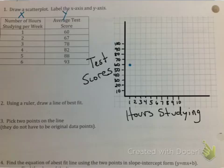You can see that I've already plotted my first point, and so our first point was 1 hour a week. If you studied 1 hour a week, your students got an average test score of a 60. If they studied 2 hours a week, they got an average score of a 67. 3 hours a week was a 78. 4 hours a week was an average of an 82. 5 hours a week was an average of an 88. And if students put in 6 hours a week, they had an average of a 93.